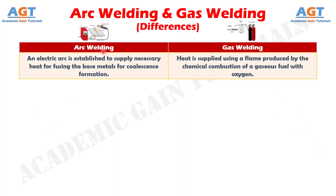Difference number 1. In arc welding, an electric arc is established to supply necessary heat for fusing the base metals for coalescence formation, whereas in gas welding, heat is supplied using a flame produced by the chemical combustion of a gaseous fuel with oxygen.